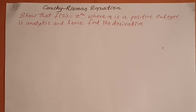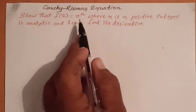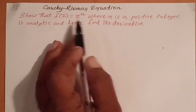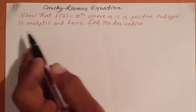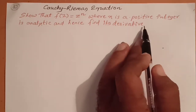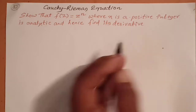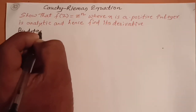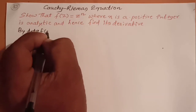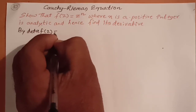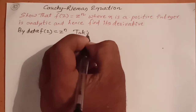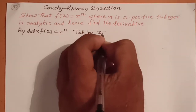Moving to one more problem on the Cauchy-Riemann equation. The problem is: show that f(z) = z^n, where n is a positive integer, is analytic. That is, show f(z) = z^n is analytic, and hence find its derivative f'(z). By data, it is given f(z) = z^n.